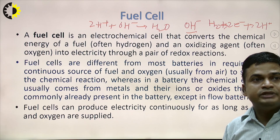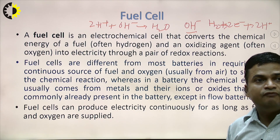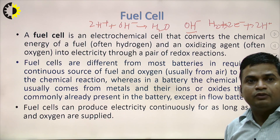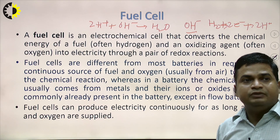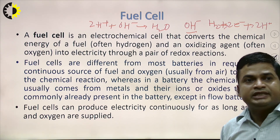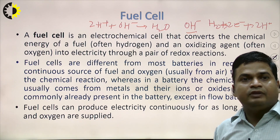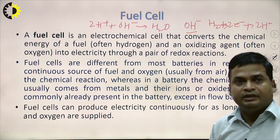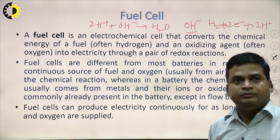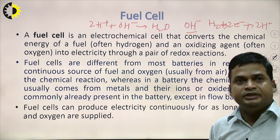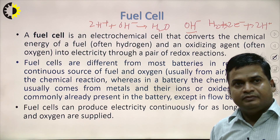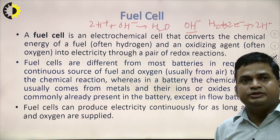Fuel cells are different from most batteries in requiring a continuous source of fuel and oxygen to sustain the chemical reaction, whereas in a battery the chemical energy usually comes from metals. Fuel cells can produce electricity continuously for as long as fuel and oxygen are supplied. This concludes the discussion on different types of renewable energy resources. In the next class, we will discuss some more renewable energy resources in detail. Thank you.